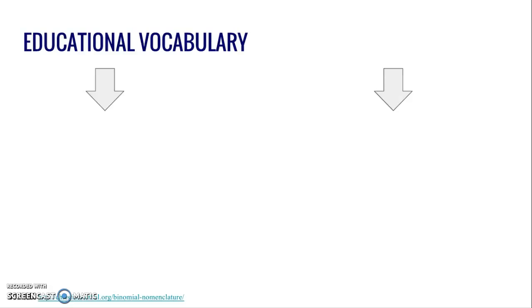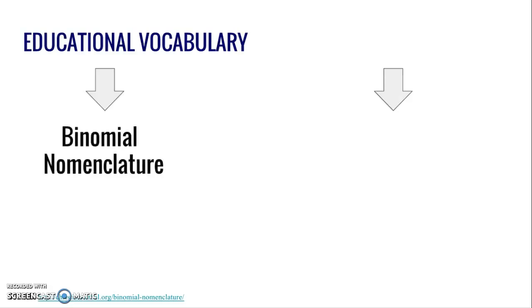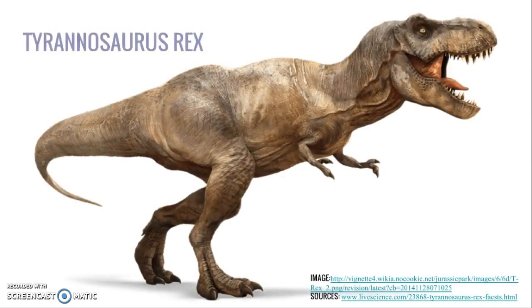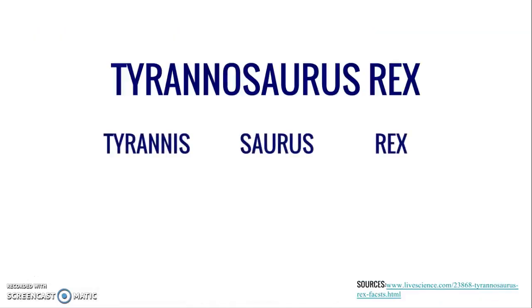When discussing Latin used in an educational setting, one significant use is binomial nomenclature — a system developed to create universal names for each species using Latin words, considered the professional way to identify organisms among scientists today. One example is the T-Rex, or Tyrannosaurus Rex, which is based on three Latin words: Tyrannus, Saurus, and Rex, translating to 'Cruel Lizard King.' The term T-Rex is so ubiquitous that many people forget it is Latin at all, making it a great example of how Latin has blended naturally into the English language.